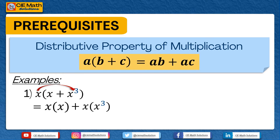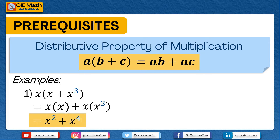Then we simplify each term using the multiplication law of indices. If you multiply x and x, that gives us x raised to 2. And if you multiply x times x cubed, that gives us x raised to 4. So the product of x with the quantity x plus x cubed is x raised to 2 plus x raised to 4.